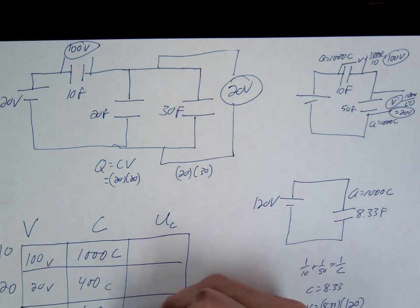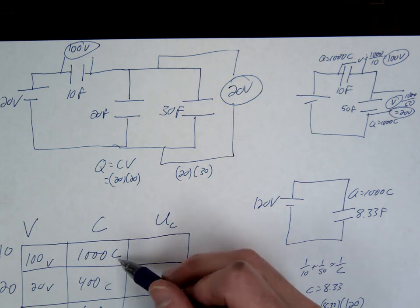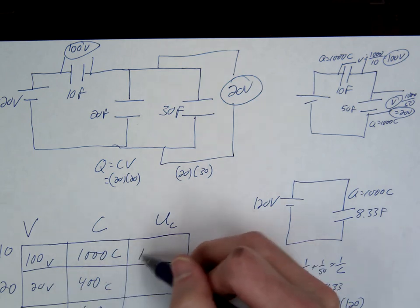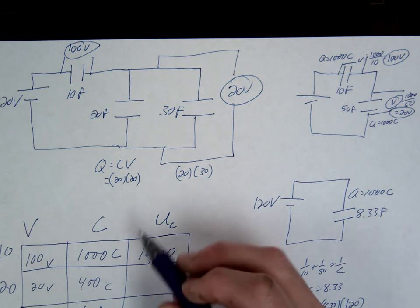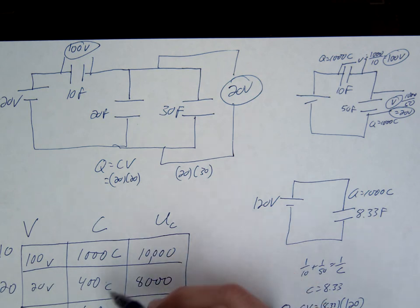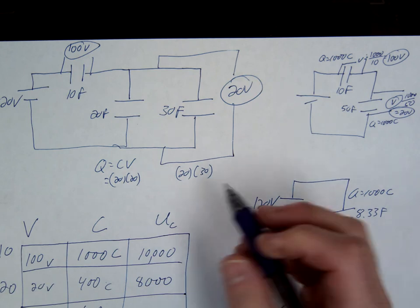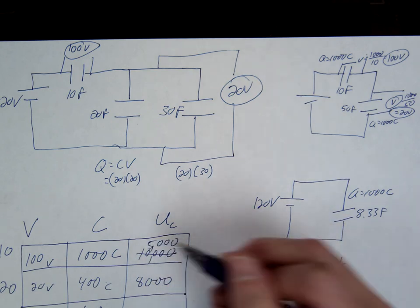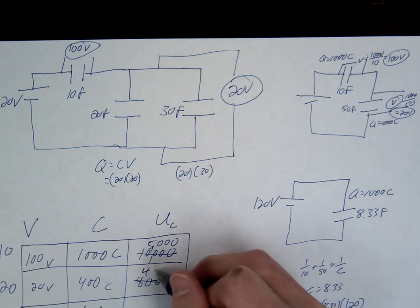And do the mini check. These two should add up to 1000. Okay, multiply cross. This gives us 10,000. What's this? 8,000. Oh, I forgot to divide by 2. Alright, good job. Thanks for paying attention. 5,000. 4,000.